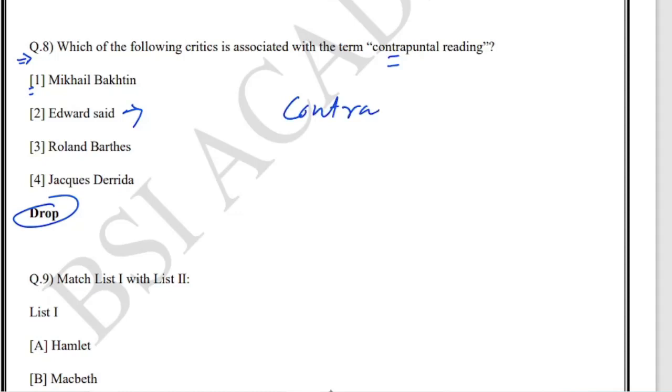Edward Said said to read something contrapuntally. What does he mean by this? In short, contrapuntal reading means trying to get the hidden meanings - not just what the text says, but trying to get the hidden meaning of the text.